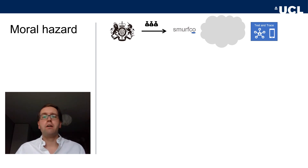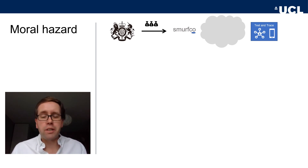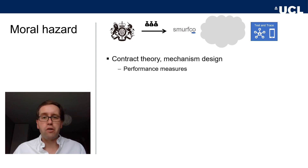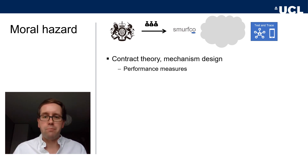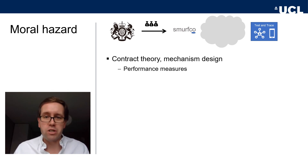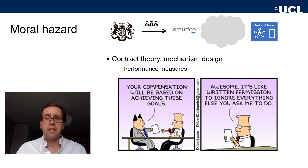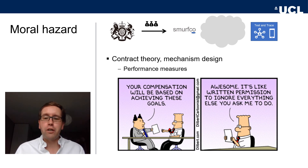We hopefully now understand the problem of moral hazard in the principal-agent relationship. So what are the solutions? How does the principal get the agent to do what they want? This is a preview of what is sometimes called contract theory or mechanism design within economics. The big question is: how do you design contracts or interactions that serve the principal well? The obvious first thing is to have a contract and include performance measures — specific descriptions of tasks that the agent needs to perform.